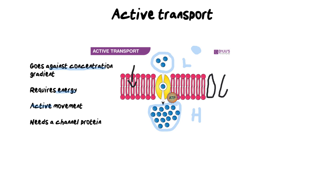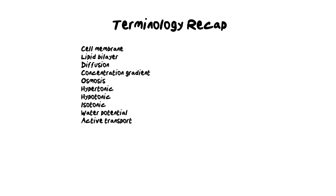In active transport we need a special kind of channel protein, shown in yellow in the diagram, that works like a swing door — it only allows travel in one direction. Something locks into its space, gets delivered to the other side, and that locking mechanism only works with ATP. Active transport is needed because the body and other systems often require extra amounts of nutrients, so we must go against the concentration gradient to ensure we don't lose anything.